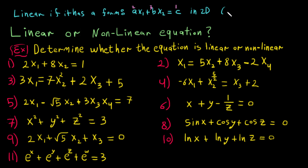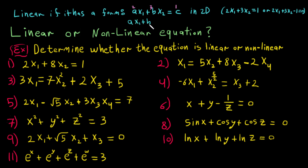For example, if we put a equal to 2, b equal to 3, and C equal to 1, we get 2x1 plus 3x2 equal 1. Or if you take the constant to the left-hand side it will be 2x1 plus 3x2 minus 1 equals 0. In three dimensions it looks like ax1 plus bx2 plus cx3 equal d.